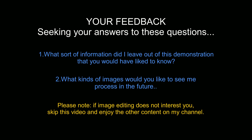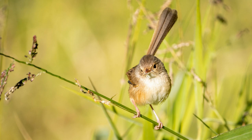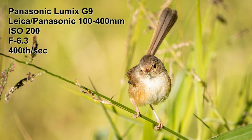And speaking of camera skills, here are the essential settings. This was taken on the Panasonic Lumix G9 with the Leica Panasonic 100-400mm lens. The ISO was 200, aperture f/6.3, and the shutter speed was 1/400th of a second. So that's how I took the photo — now let's see how I take it from RAW to finished product.